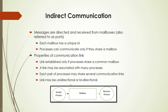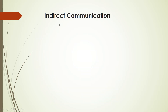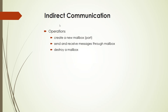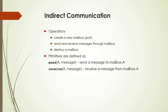The link can be unidirectional or bidirectional, same as in direct communication. Operations for indirect communication involve creating a new mailbox or port, using send and receive primitives — send a message to mailbox A, receive a message from mailbox A — and finally destroying the mailbox when the task is done.